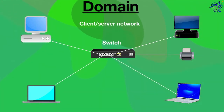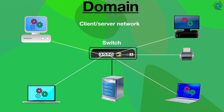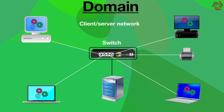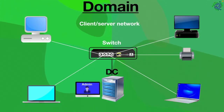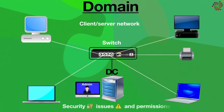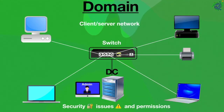In a domain network, security and resource management are centralized. That means every computer on a domain network is controlled by a centralized server that manages each computer within the domain and controls which user can have access to which resources. This centralized server is called the domain controller, which is used by the administrator to control the network — including any security issues and permissions — all from one centralized location.